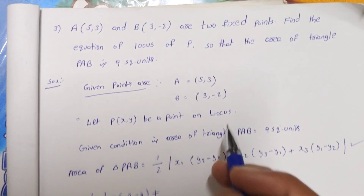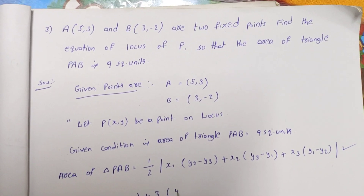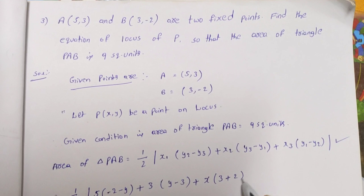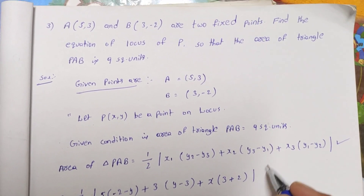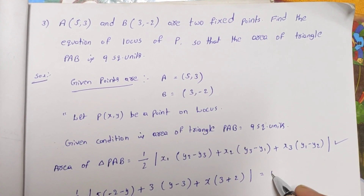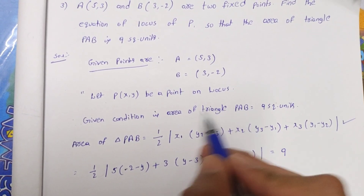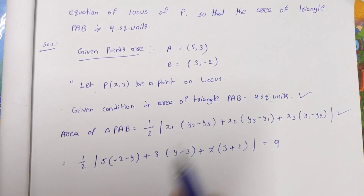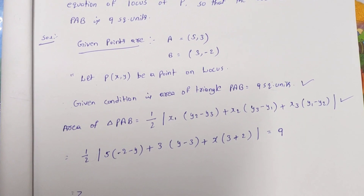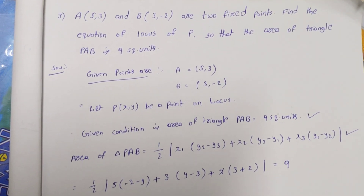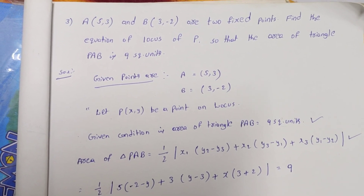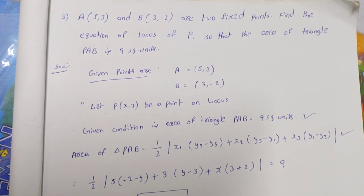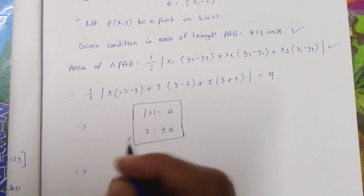Substituting the values: x(3 minus (-2)) plus 5(-2 minus y) plus 3(y minus 3), mod is equal to 9. So the area of triangle equals 9 square units. This is the condition. Using the rule: mod x equals a means plus or minus a.